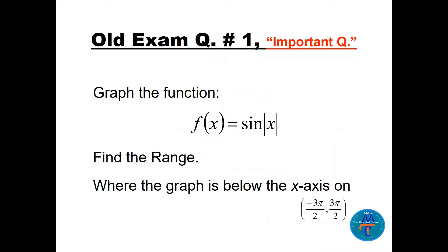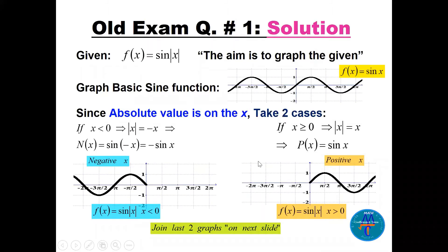Question number one: we have to graph sine of the absolute value of x, find the range, and see where the graph is below the x-axis — that's a really important question. If we have to graph something with absolute value on the x, we start with the basic sine function. Since there's an absolute value on x, we take two cases because x can be positive or x can be negative.